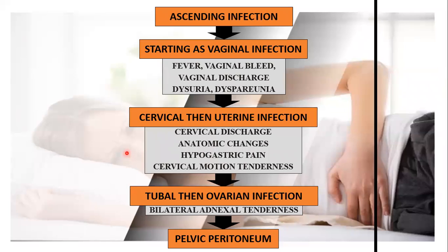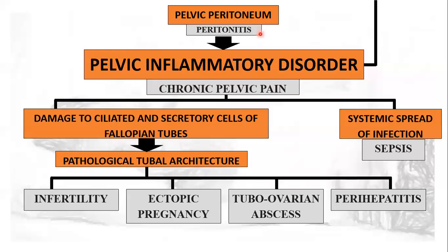The ascending infection starts at the vagina, manifested as fever, vaginal bleeding, discharge, dysuria, and dyspareunia. As it progresses to cervical and uterine infection, the patient would experience cervical discharge, anatomic changes in the cervix and uterus, hypogastric pain, and cervical motion tenderness. After that, it would infect the tubes and ovaries, manifested as bilateral adnexal tenderness. It would then reach the pelvic peritoneum, manifested as peritonitis.